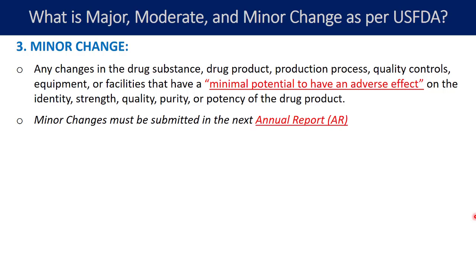Minor changes must be submitted in the next annual report. That means if you are making a minor change to your manufacturing processes or testing procedures, you do not need to obtain prior approval or acknowledgement from the FDA. You simply summarize those minor changes and inform the FDA during your next annual report filing.